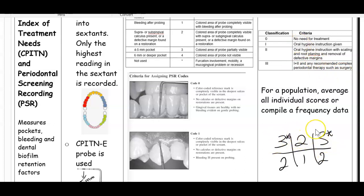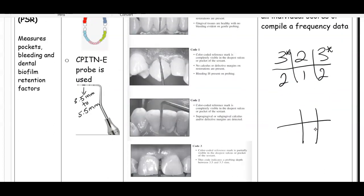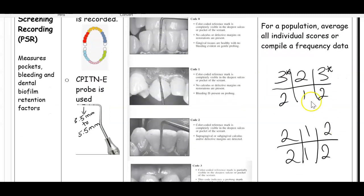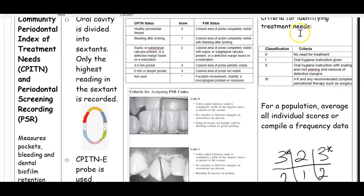If I did a PSR for another client and got 2, 1, 2, 2, 1, 2 - remember two means I detected calculus but no deep pockets - if the highest reading was a two, this person would need scaling and root planing, not debridement. If they had overhangs, those also need to be corrected. We look at the highest code on the PSR, and based on that, we decide what type of treatment they need.